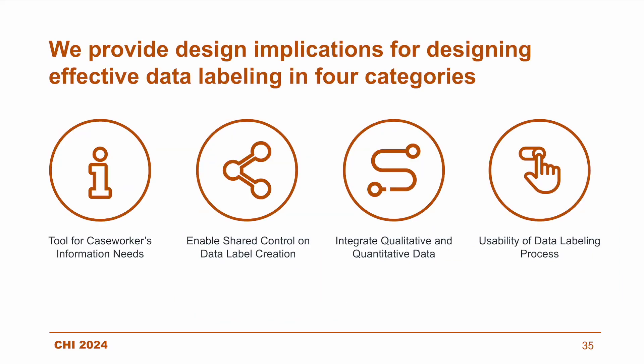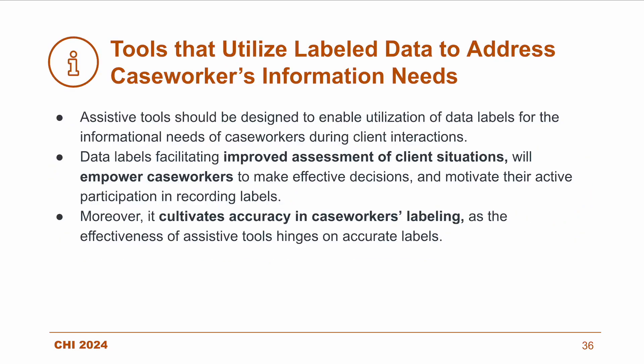So, what do we learn from these findings? Analysis of our findings suggests implications for designing effective data labeling, described in four categories. I will provide an overview of the first three today. First, we propose that assistive tools should be designed to enable utilization of data labels for the informational needs of caseworkers during client interactions. Data labels that facilitate improved assessment of client situations will empower caseworkers to make effective decisions and motivate their active participation in recording labels, and cultivate accuracy in labeling as the effectiveness of assistive tools hinges on precise labels.